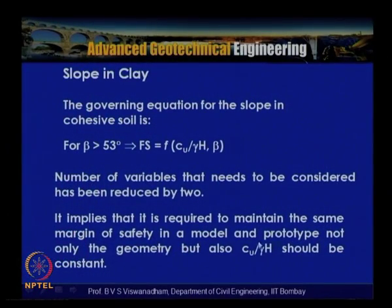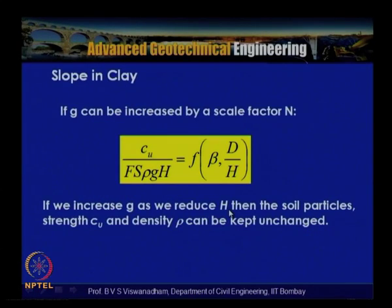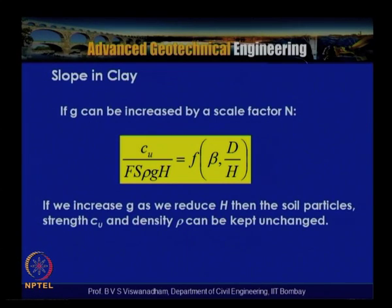To maintain the same margin of safety, not only the geometry but also c_u divided by gamma h must be the same in model and prototype. Expressed as: c_u divided by (factor of safety times rho times g times h) equals a function of beta and d/h. If g is increased by scale factor n and h is reduced accordingly, the soil particle strength c_u and density rho can be kept unchanged.